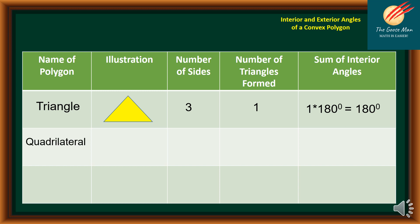Next, we have quadrilateral, which means we have four sides. We can draw two triangles with one diagonal, so we have two triangles formed. The sum of the interior angles is equal to two times 180 degrees, which is equal to 360 degrees.